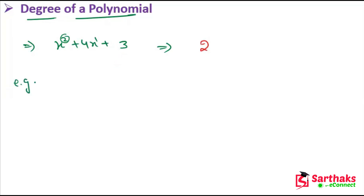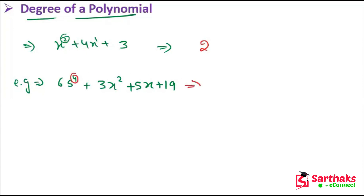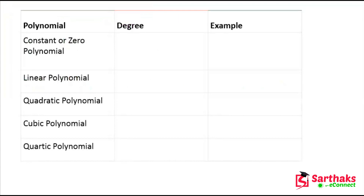For another example, consider 6s to the power 4 plus 3x squared plus 5x plus 19. Here both s and x are variables, but the highest exponent is 4 on the variable s. So the degree of this polynomial is 4.